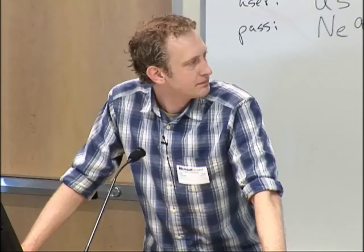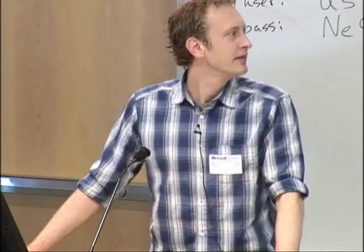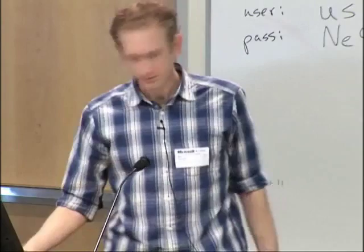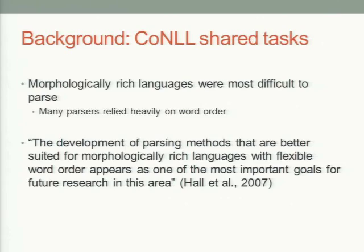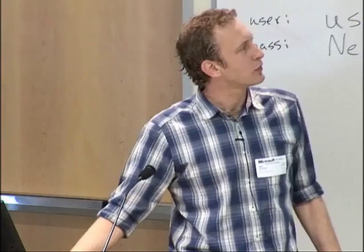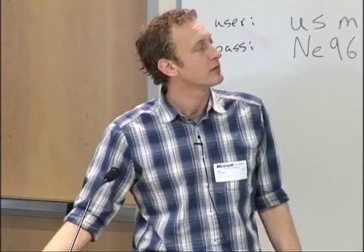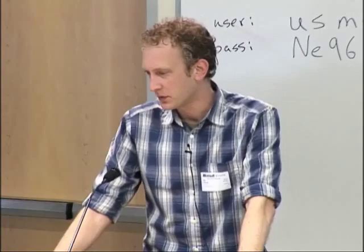In a dependency parse, we're looking at the head for each token, and everything is basically headed by the finite verb. For instance, 'John' is the subject, headed by the finite verb, and is in a subject relation. What was found in the CoNLL task was that morphologically rich languages were the most difficult to parse. A lot of the parsers rely heavily on word order, and morphologically rich languages tend to have more flexible word order because you mark constituent roles with morphology rather than word order.